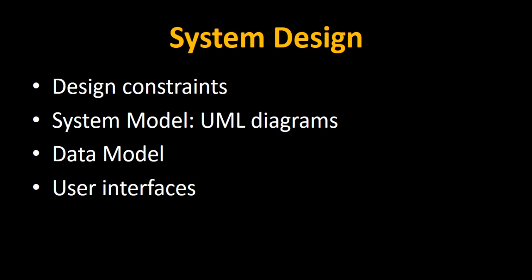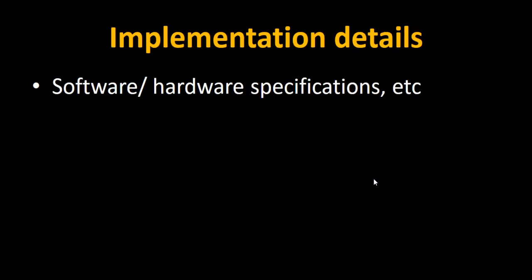In the system design part, you need to cover design constraints, system models, and your UML diagrams like use case diagram, activity diagram, deployment diagram, data models, etc. Then data models, user interfaces, etc.